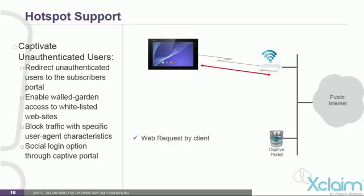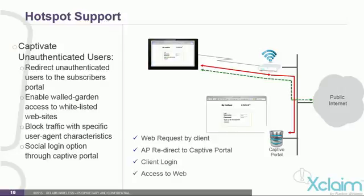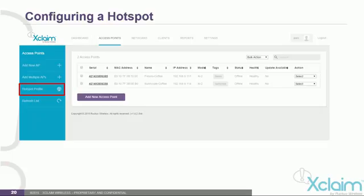When there is a web request by a client attached to an access point, the AP blocks the request and redirects it to the hotspot portal where the client will need to log in with their credentials. Once they have logged in, the AP will then allow the client to access the web. A hotspot is a physical location that offers internet access over a wireless LAN through the use of a router connected to an ISP. Hotspots typically use Wi-Fi technology and are often found at airports, bookstores, coffee shops, hotels, libraries, restaurants, schools, and universities.